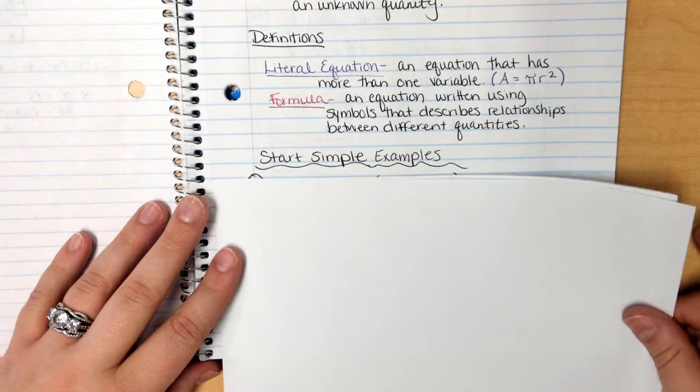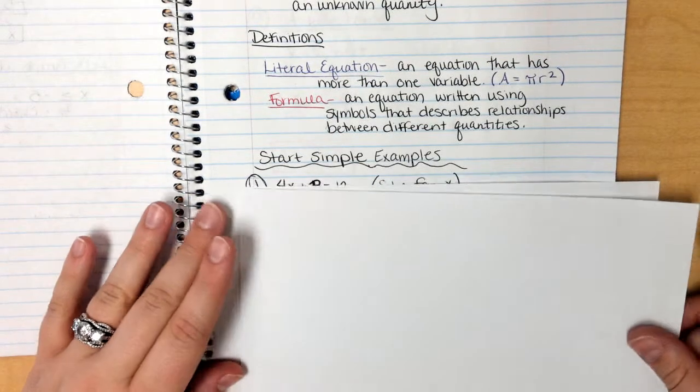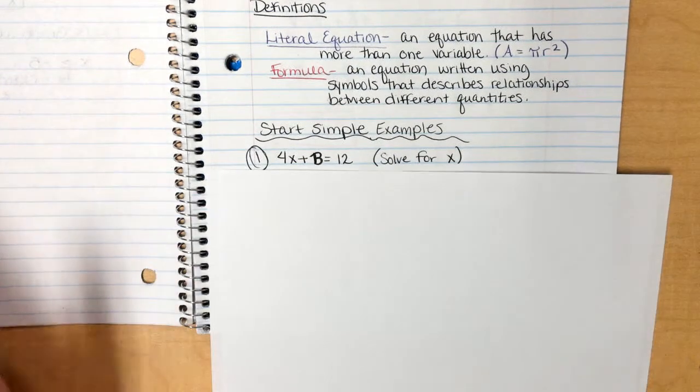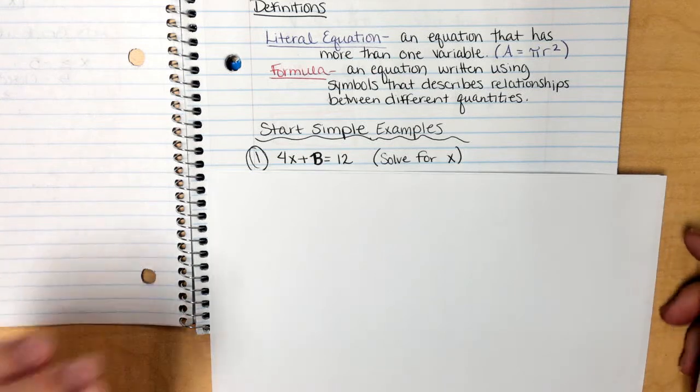So let's start with some super simple examples. My super simple example would be this guy. Yes, that is a b. Don't freak out. It's 4x plus b equals 12. Now for literal equations, they are no different when we solve them from regular equations.